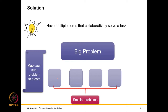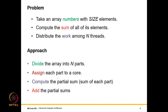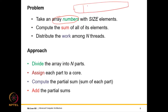Let us consider a working example — computing the sum of all elements in a very large array that can contain a billion elements. The aim is to compute the sum, distributing the work among n threads. We divide the array into n parts and assign each part to a core, computing a partial sum for each part. We do not worry about overflows.